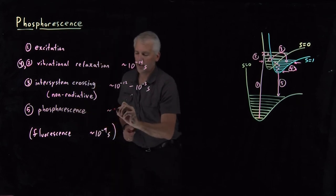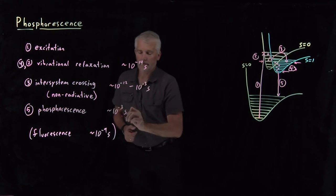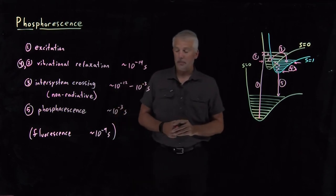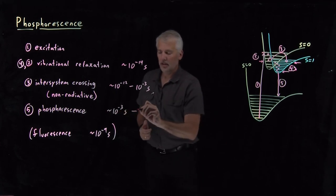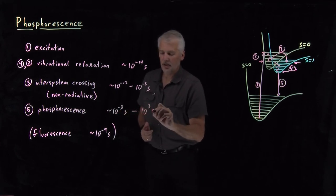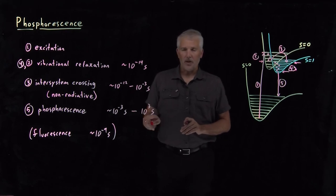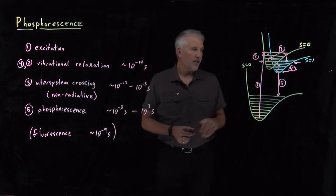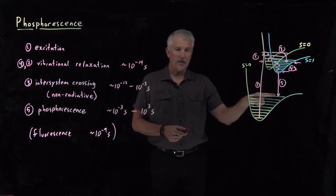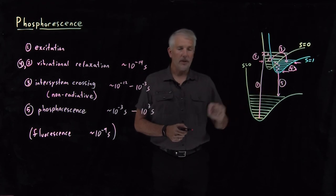That phosphorescence, because it's very slow, typically doesn't happen any faster than milliseconds, depending on the molecule. It may be more strictly forbidden in some molecules than others, so it might happen as slow as many tens or hundreds or thousands of seconds, as you know from using glow-in-the-dark stickers or stars that you put on your bedroom wall. You charge those up with light, and then they glow for perhaps the next 15 minutes until the light fades. So that phosphorescence process is the slow release of light. It's slow because it's a spin-forbidden process.